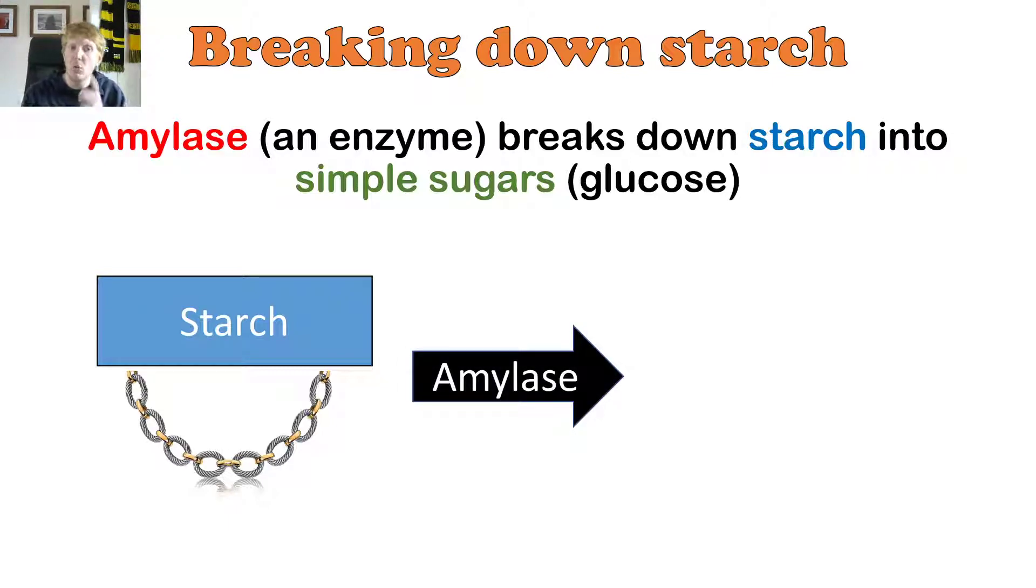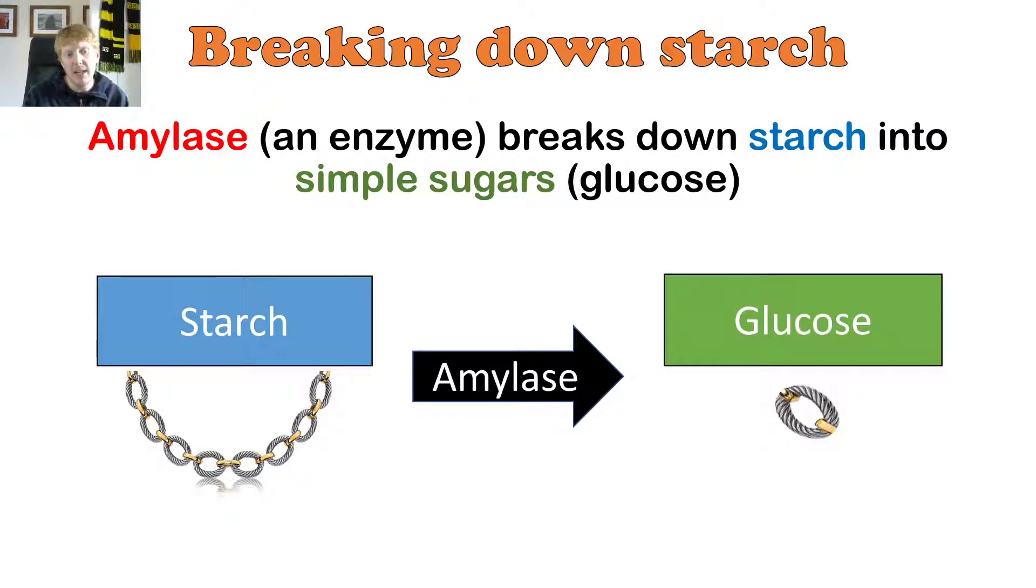If amylase came along, what would happen is it would break that necklace down into little bits. Or break starch down into simple sugars like glucose. You can see that it's broken down into just that single link just there.